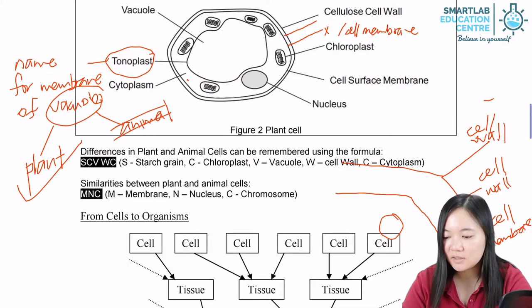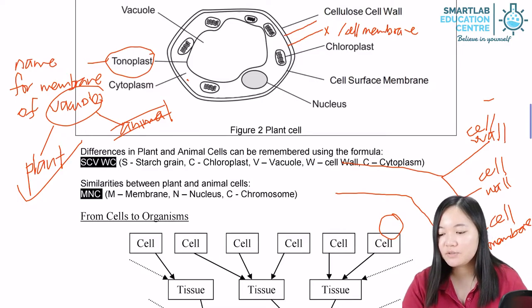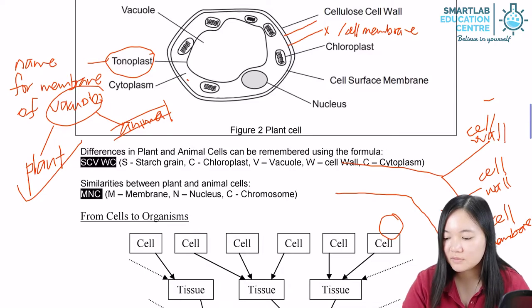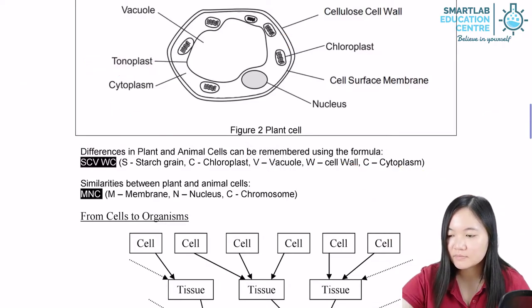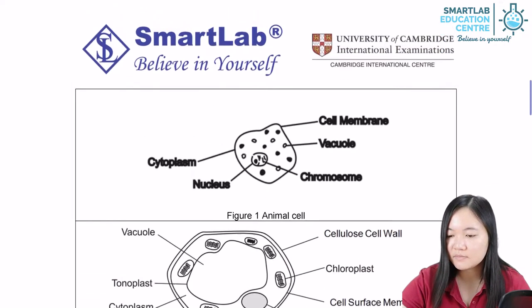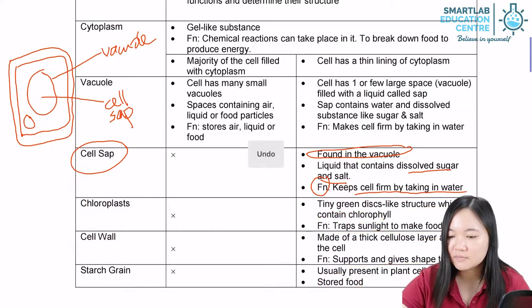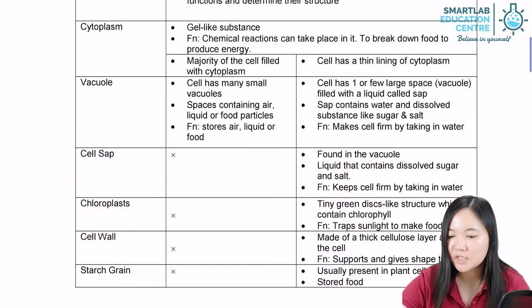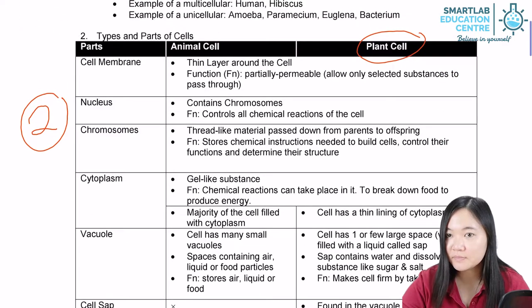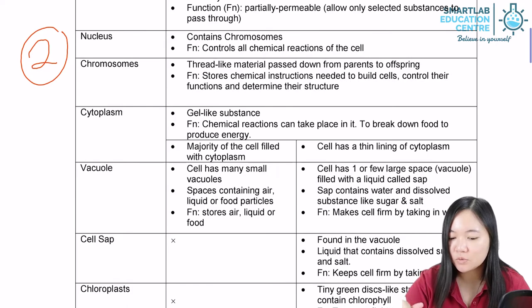Let's take a look at the differences between animal cells and plant cells. As you can see here, animal cells do not have cell sap.